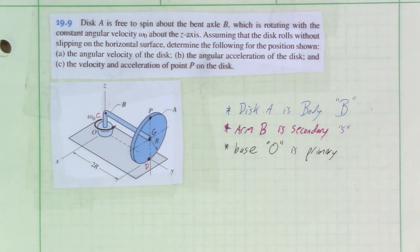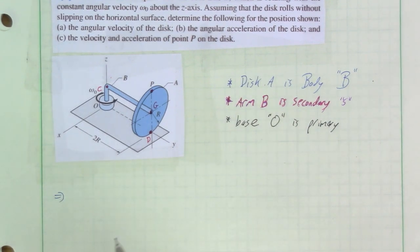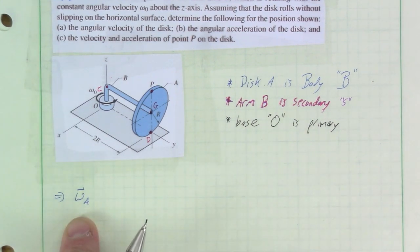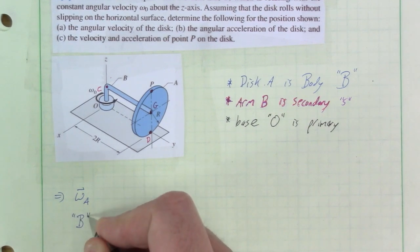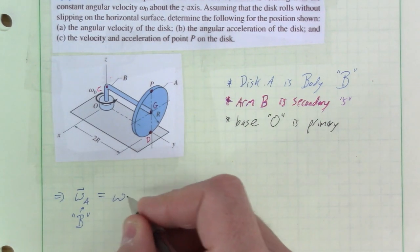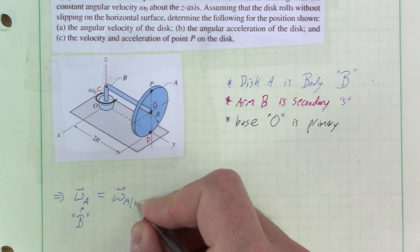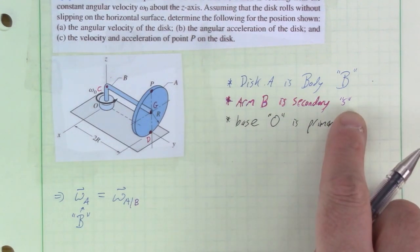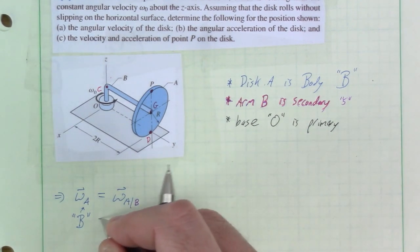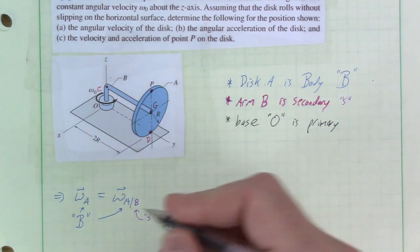This kinematics framework lets us describe that complicated relationship. Starting with the rotation of body A: the angular velocity of the body equals the relative angular velocity of the body with respect to the secondary (arm B), plus the angular velocity of B.